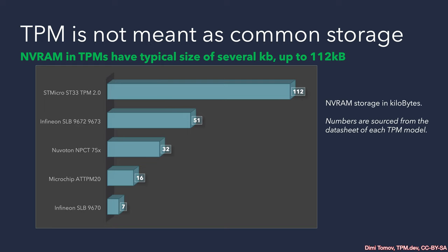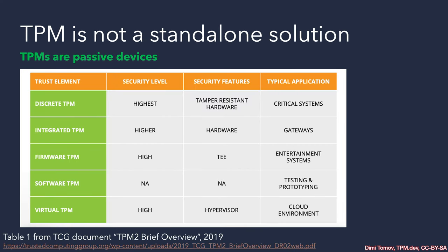Using the NVRAM as a common secure storage is not a good approach. The last situation when a TPM is not suitable is when you need a standalone security solution. By design, this is not a drawback — rather, it is the purpose of the TPM to be a passive device. A host device is needed to send commands to the TPM to perform different operations, which gives us a high security root of trust.